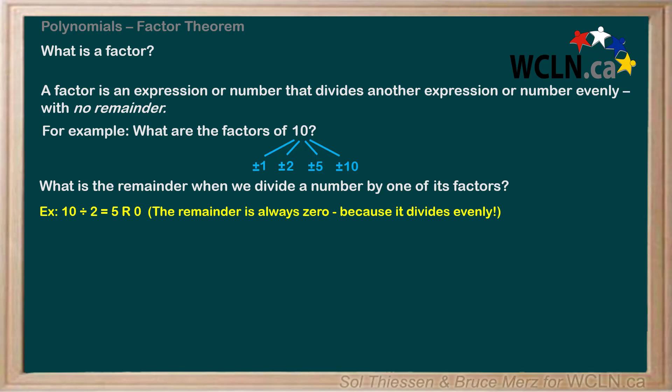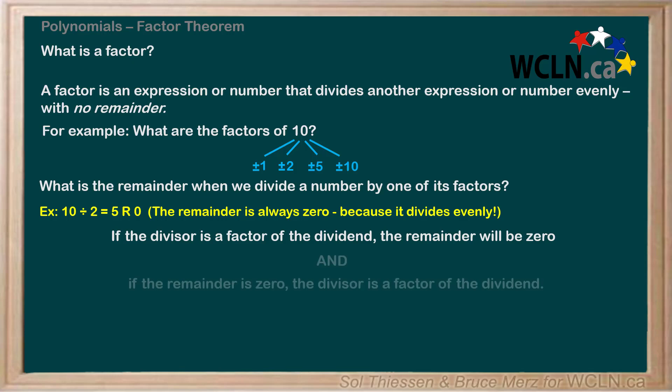This leads us to the conclusion: if the divisor is a factor of the dividend, the remainder will be 0, and if the remainder is 0, the divisor is a factor of the dividend. So here's how that looks in the example we just did. If the divisor, which is 2, is a factor of the dividend, which is 10, the remainder will be 0.